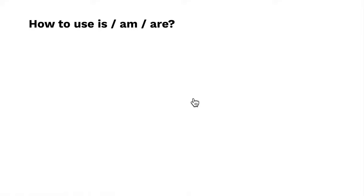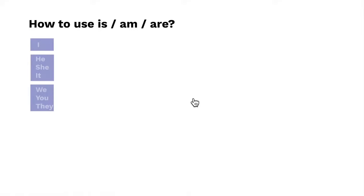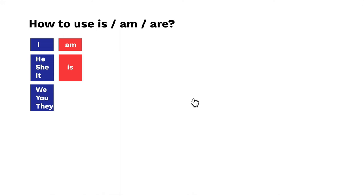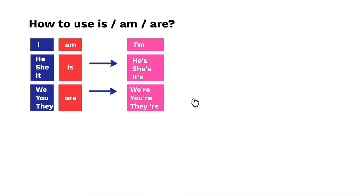How do we use it? 'I' will use AM. 'He,' 'she,' 'it' will use IS. 'We,' 'you,' 'they' will use ARE. The short forms are: I'm, he's, she's, it's, we are, you are, they are.